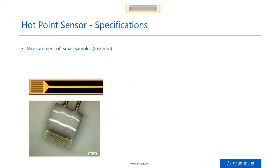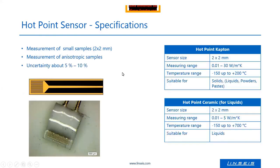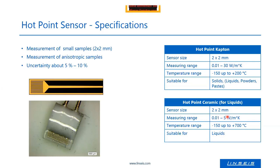The specifications of the hot point sensor: it was designed mainly for small samples down to 2 by 2 millimeters. It can also be used for anisotropic samples, which is quite useful. The uncertainty is between 5 and 10 percent. The measurement range of the Kapton hot point sensor is between 0.01 and 30 W per meter Kelvin, and for the ceramic hot point sensor, it is 0.01 up to 5 W per meter Kelvin.